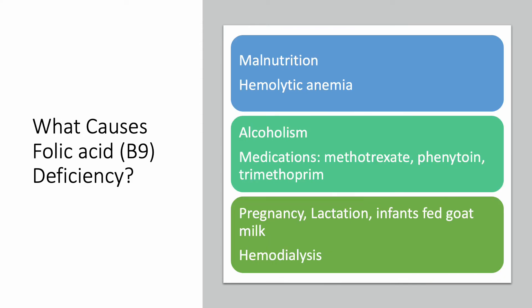What causes folic acid deficiency? Malnutrition if you're not on a balanced diet, hemolytic anemia where red blood cells break down, and alcoholism, which causes many vitamin deficiencies. Some medications like methotrexate used for rheumatoid arthritis, phenytoin used for seizures, and trimethoprim used with sulfa as an antibiotic. Many pregnant and lactating women can be deficient, which is why they need to take supplements regardless. Infants fed goat milk exclusively may become folic acid deficient, as well as patients on hemodialysis.